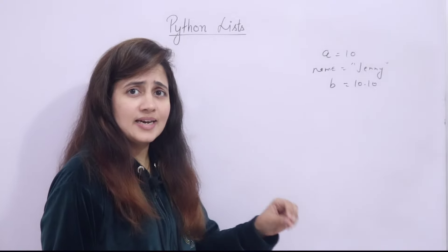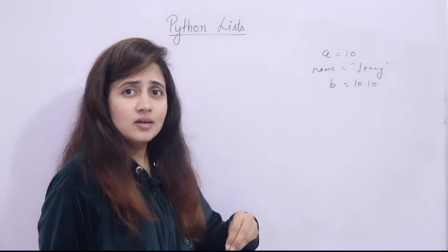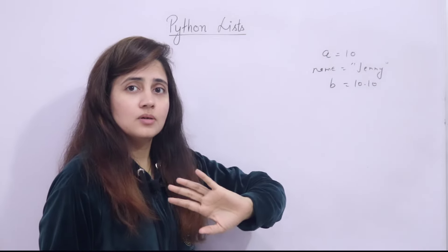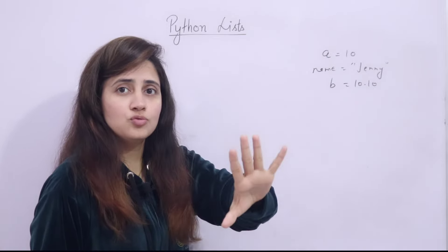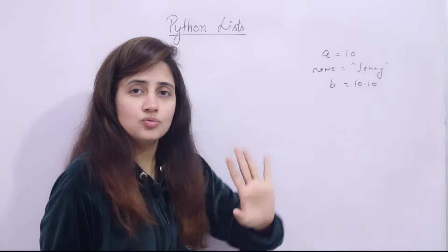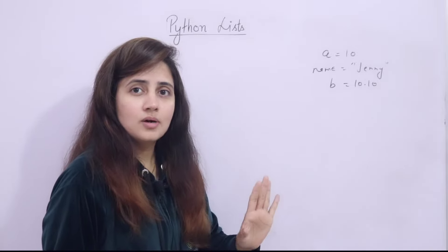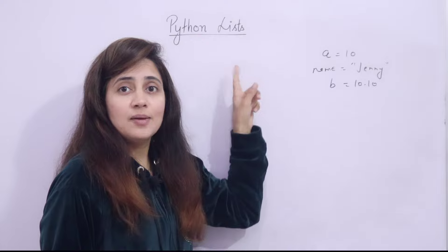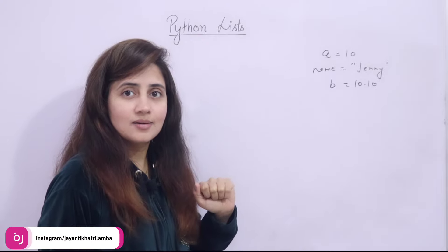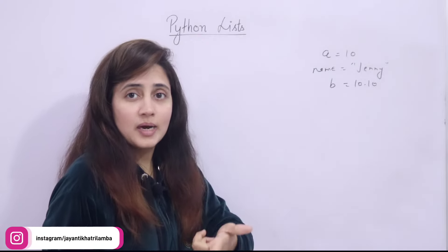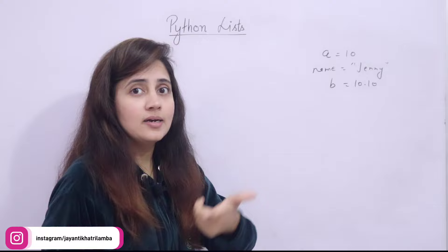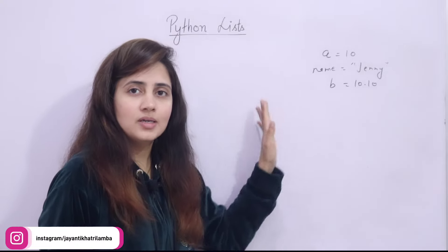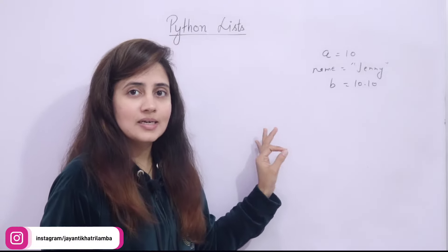So is there any way under a single variable name we can store row numbers of 10, 60, or 100 students? Yes, we can do it with the help of list. There are other ways also in Python — Tuple, Set, Dictionary — those will be discussed one by one in later videos, but here we will be discussing list.